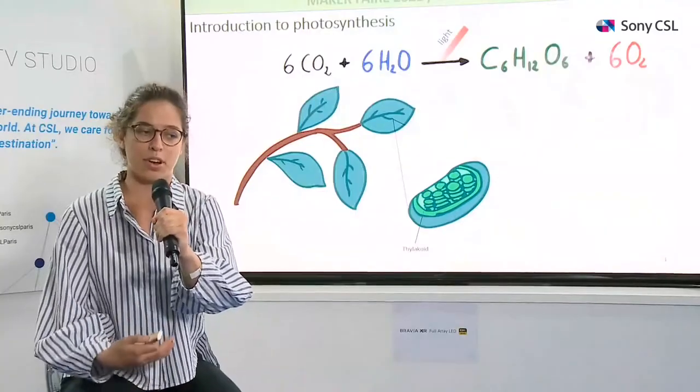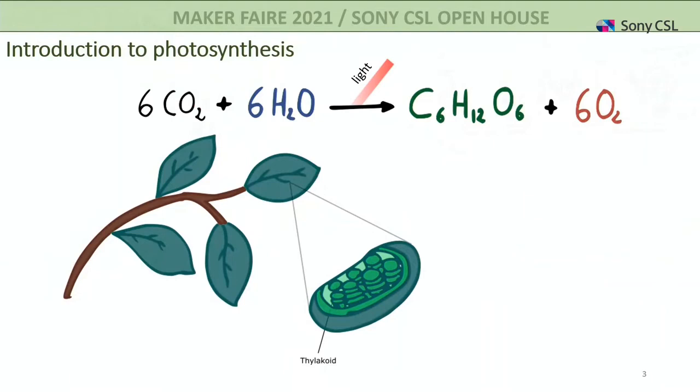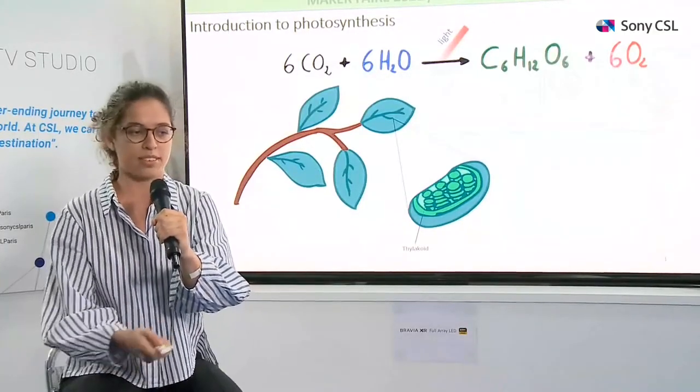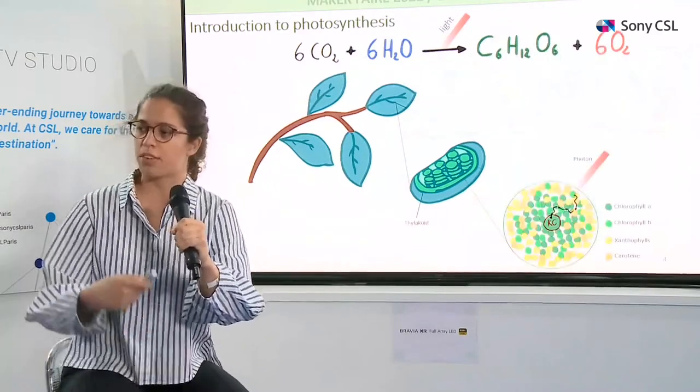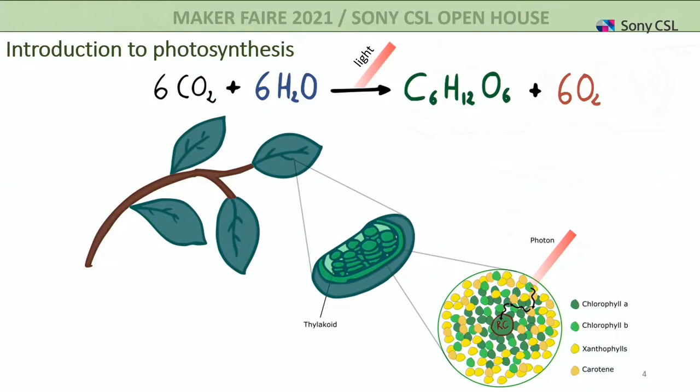Plant fluorescence is collected to get a diagnosis of the plant's status. This comes from a natural process rooted in photosynthesis, which allows plants to capture CO2 and take electrons from water to make sugars using light energy. Inside each leaf, chloroplasts contain thylakoids filled with pigments that absorb light energy and transfer it to a reaction center where light energy is converted into chemical energy.